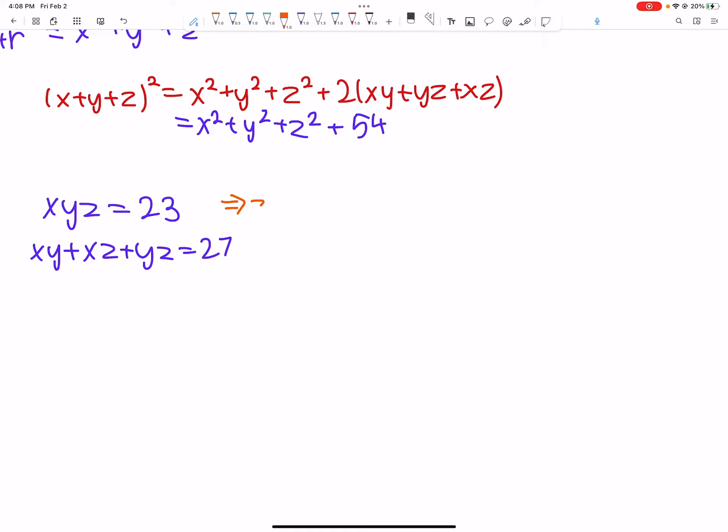Let's get rid of the variables to make things a little bit easier. So based on this first equation, we get z is 23 over xy. And then we plug it in bottom, we get xy plus xz, and xz is just 23 over y, plus yz, and yz is just 23 over x. That's 27.